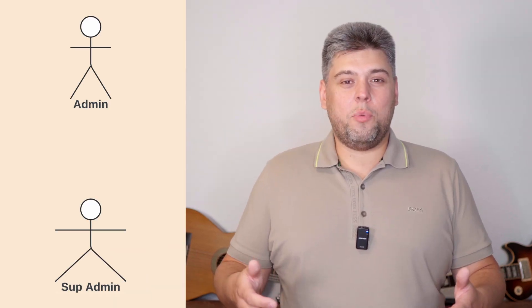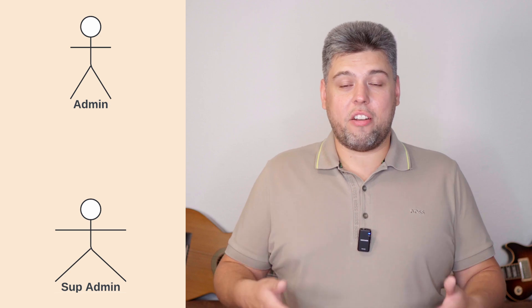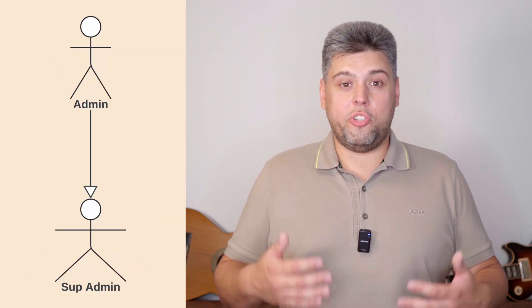Now we should consider relationships between actors. For example, one may be a specialized form of another, like an admin or super admin. The super admin will have features of an admin role, plus unique access to manage other admins. Relating one actor to another is called generalization, with an arrow pointing from child to parent. You can generalize use cases to other use cases and actors to actors, but you cannot generalize an actor to a use case or vice versa.